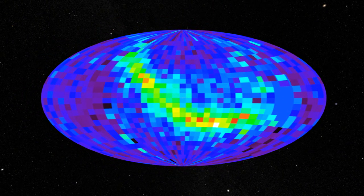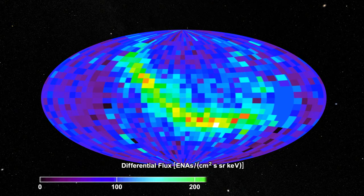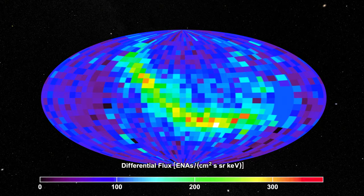The colors correspond to how many atoms hit the detector from a particular region. Violet represents few atoms, and the colors move up to red, which represents many atoms.